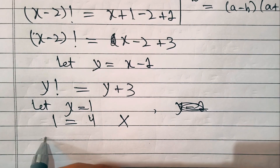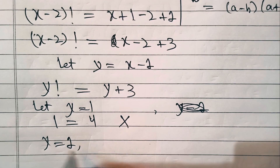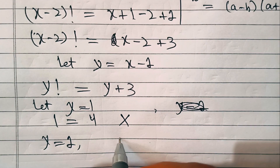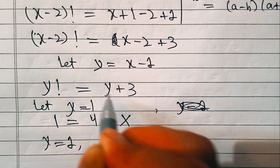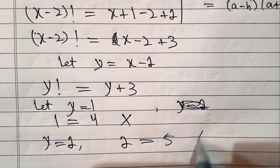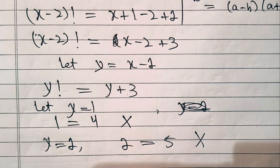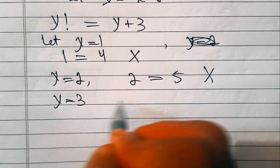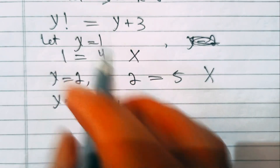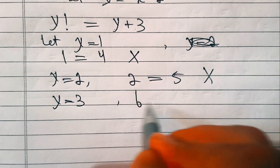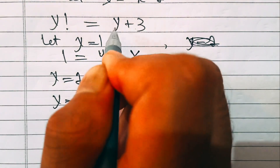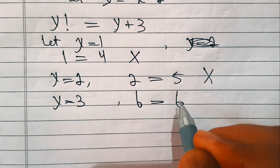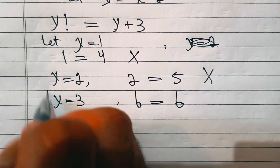If y equals two, the left side is two factorial, which is two into one, that is two, equal to two plus three which is five — again false. If y equals three, the left side is three factorial, three into two into one, which is six, and y plus three is also six — so y equals three is the correct answer.